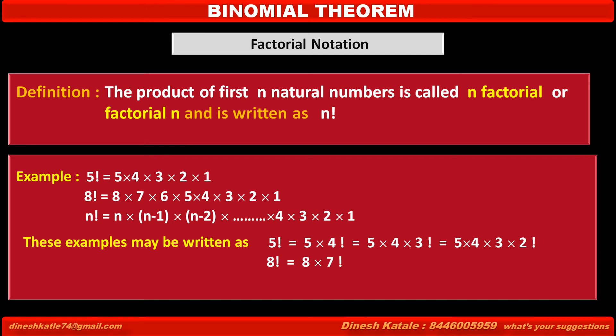Similarly, 8 factorial can be written as 8 × 7!, or as 8 × 7 × 6!, or up to any succeeding term in descending order. In general, n! can be written as n × (n−1)!, or as n × (n−1) × (n−2)!, and so on, with descending order.